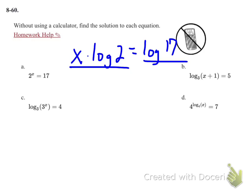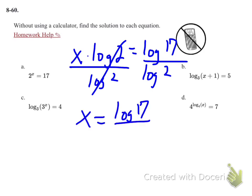I'm going to divide both sides by the log of 2. That cancels out, so I get x equals log of 17 divided by log of 2. Without a calculator, that's as far as I can go.